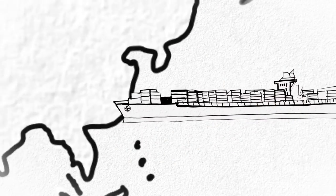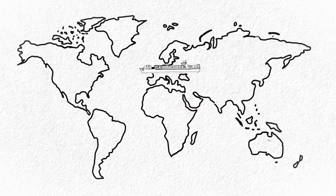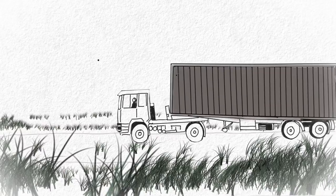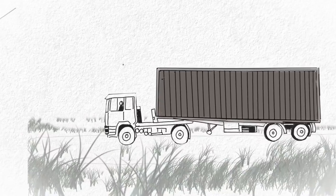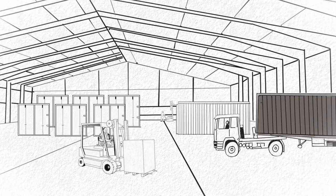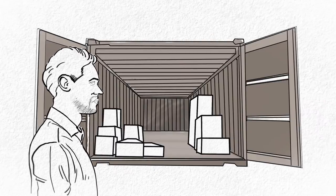But things don't always go according to plan. A lack of accurate data is one of the biggest problems in today's supply chains and can lead to poor supply chain visibility and predictability. Consequently, supply chain actors may only have inaccurate information about what is in a container and its time of arrival.